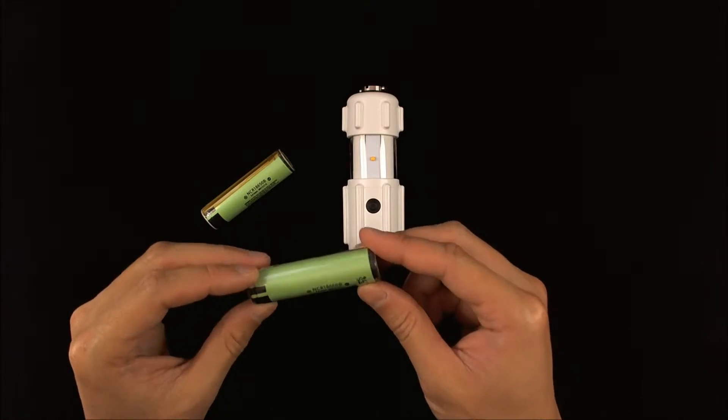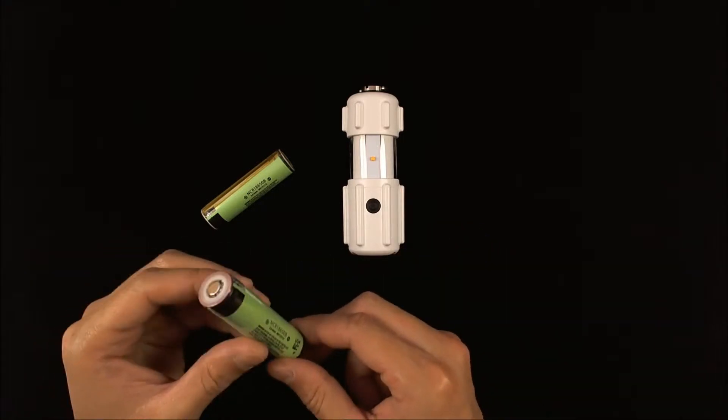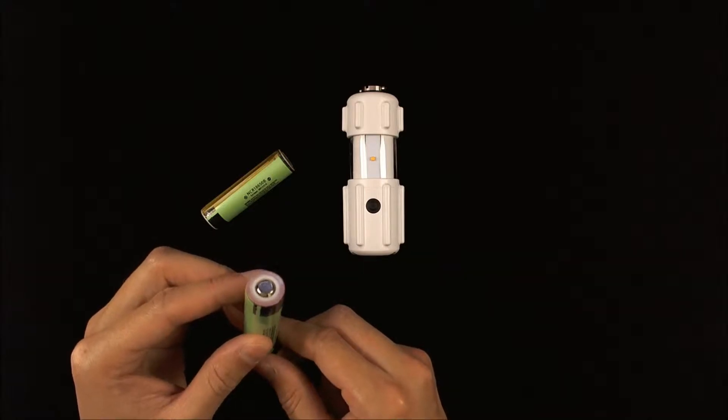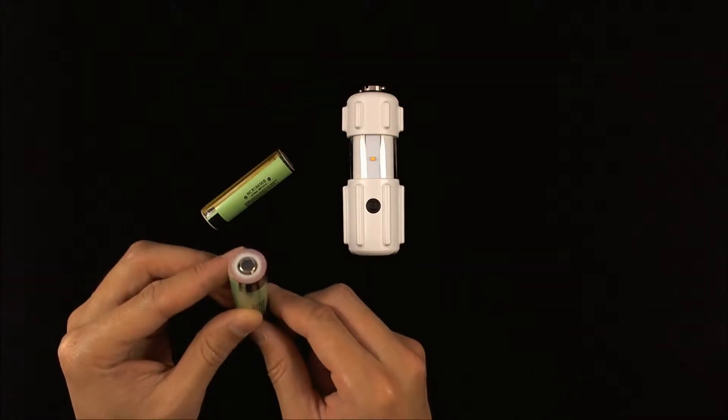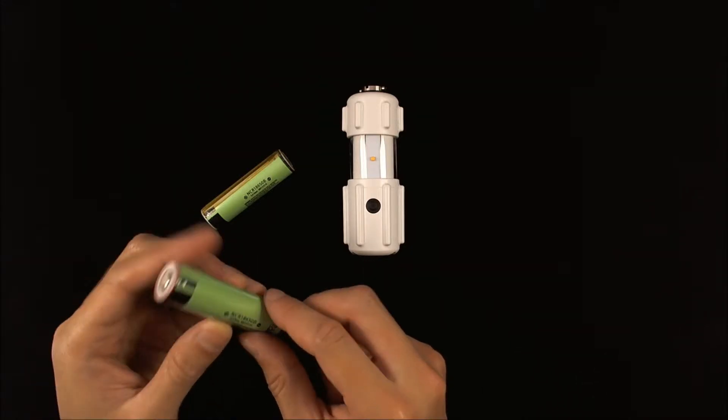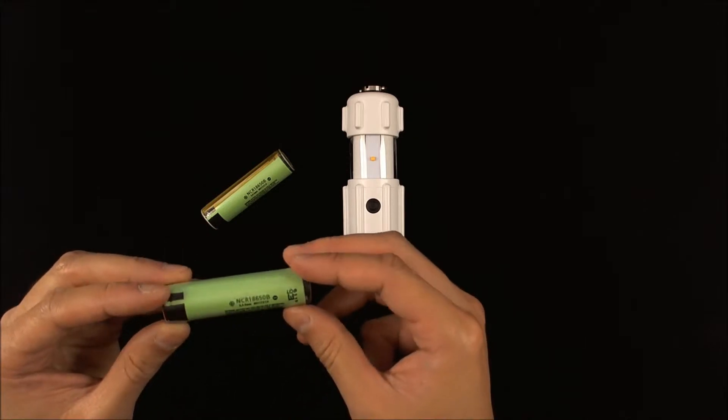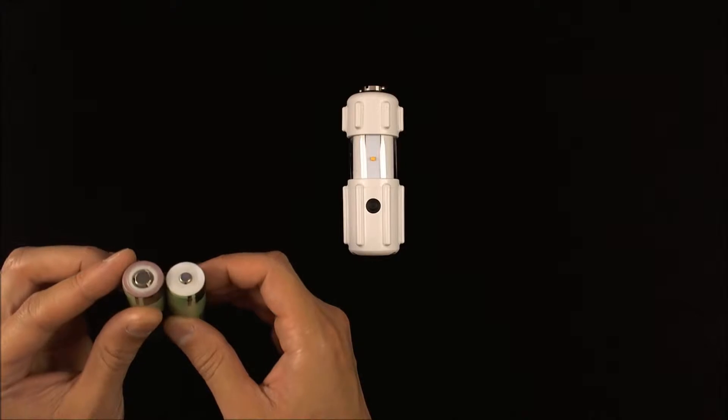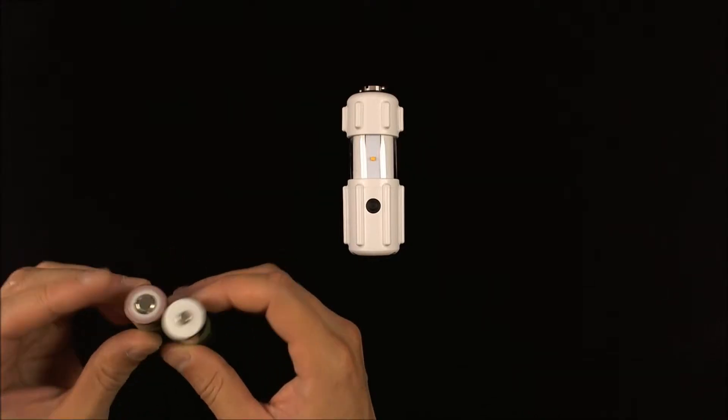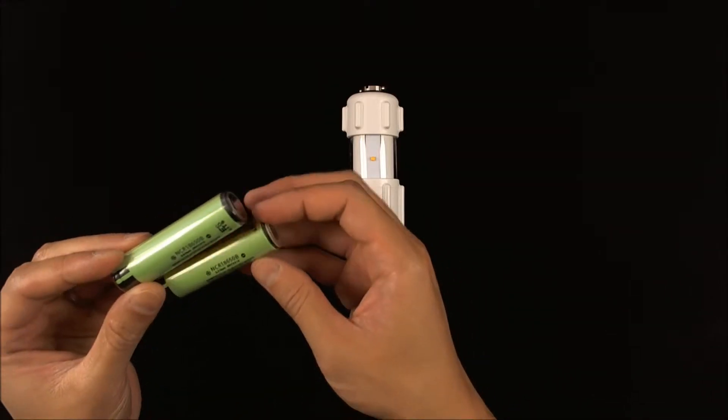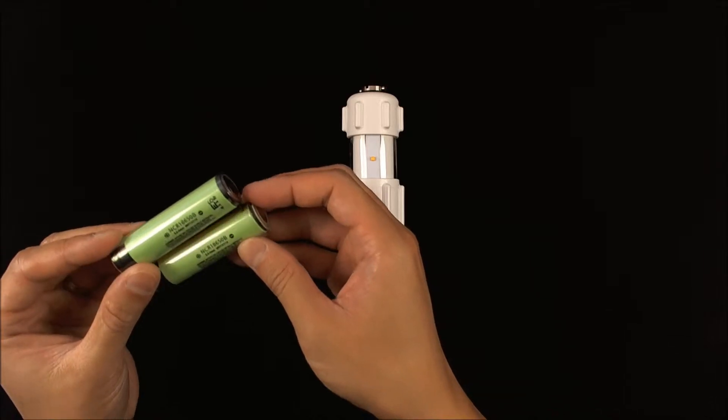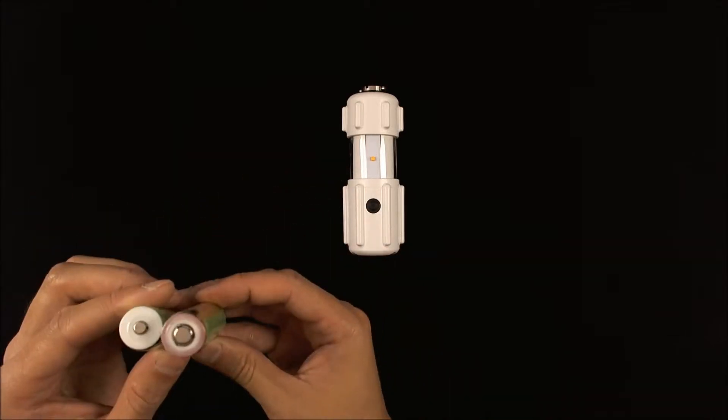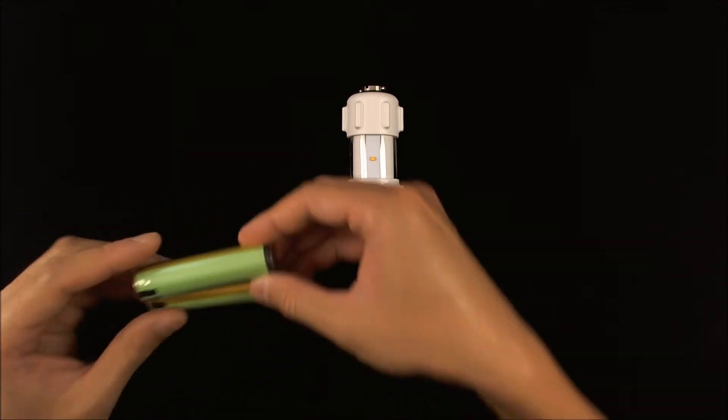We're going to address that issue and discuss the differences between an 18650 protected cell and an unprotected cell. Here I've got a couple of protected 18650 batteries. As you can see, they come in all sorts of shapes and sizes. These both happen to be the Panasonic 18650B batteries, and they look a little different, so we'll talk about that later.